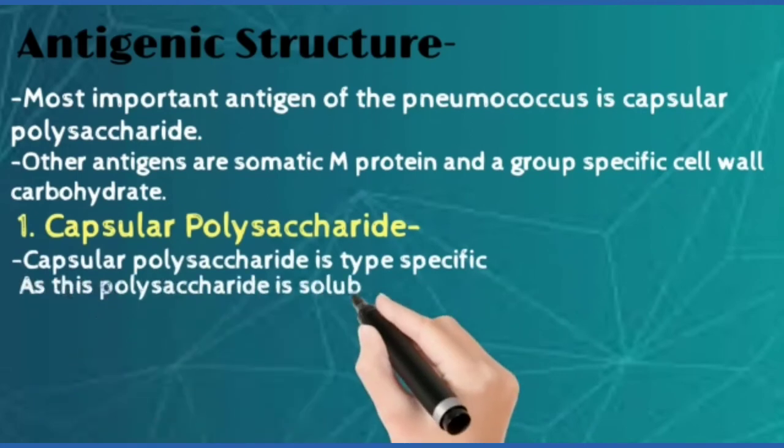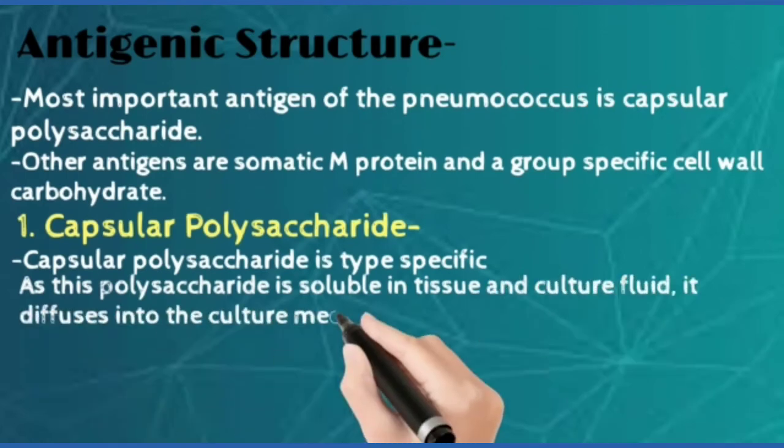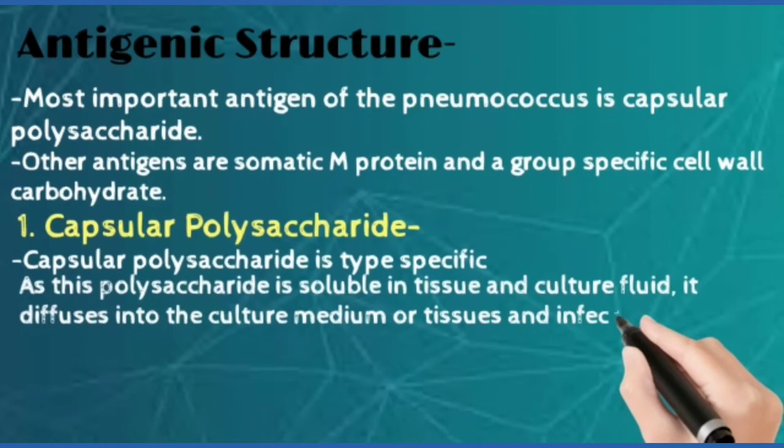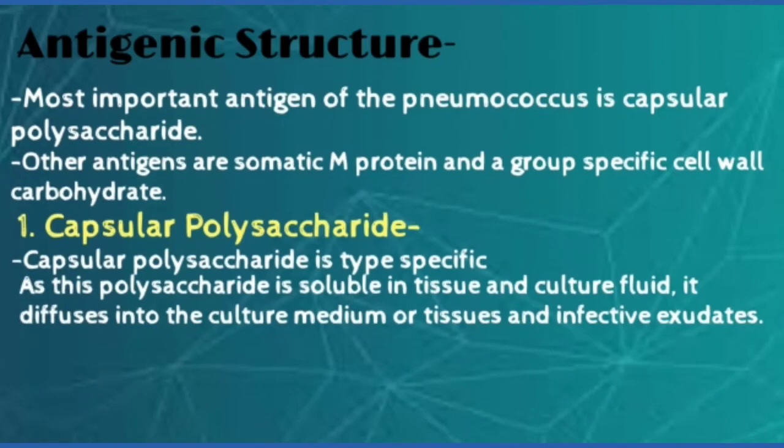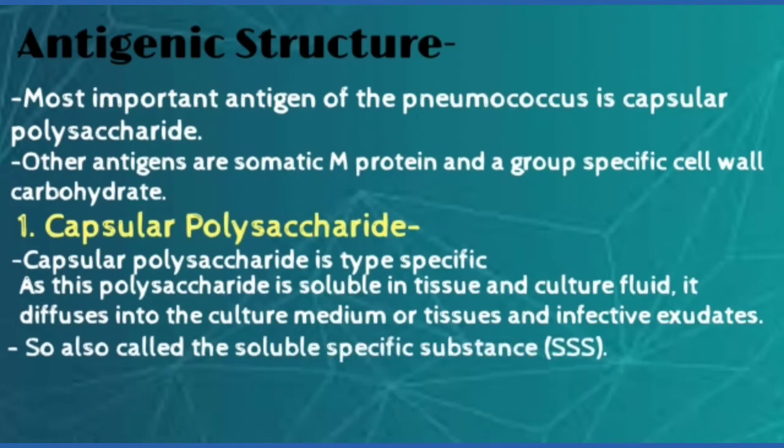First, capsular polysaccharide. They are type specific and as these polysaccharides are soluble in tissue and culture fluid, they diffuse into the culture medium or tissues and infective exudates. These are also known as soluble specific substances, SSS.